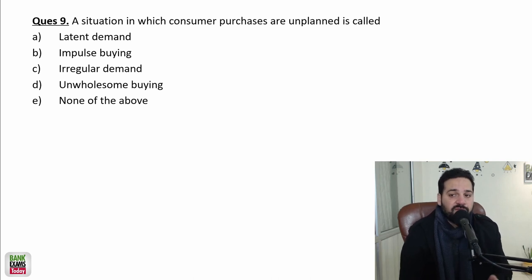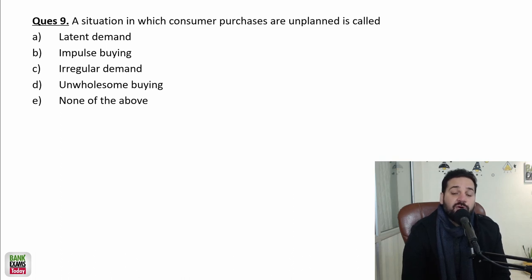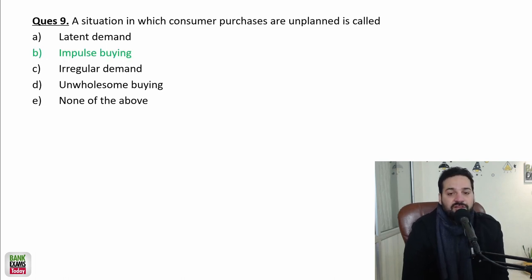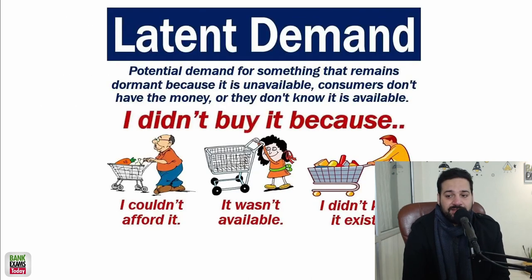A situation in which consumer purchases are unplanned — for example, there is a sale on Flipkart and they're selling shoes at 40% discount. You didn't want to buy shoes, you already have some, but you buy them because of the sale. That is impulse buying. Big Billion Day purchases are a good example of impulse buying.